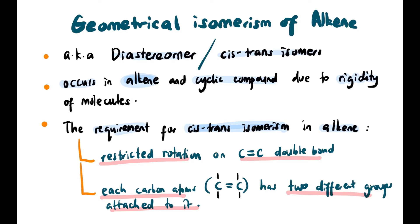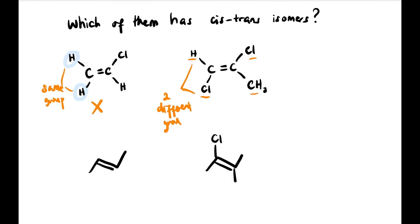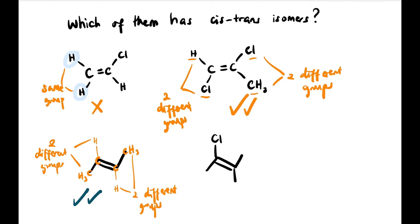Dan yang kedua, carbon-carbon dekat carbon double bond itu has two different groups attached to them. Now, let's have a look — which of them has cis-trans isomers? Yang first ini, kita nampak carbon yang sebelah kiri itu dia ada hydrogen dengan hydrogen melekat. So, cannot — because hydrogen dengan hydrogen adalah same group. Dia punya syarat mesti two different groups attached. Contoh yang kedua pula, dekat carbon yang pertama itu ada H dengan CL — two different groups. Yang sebelah kanan itu pun two different groups: CL dengan CH3. So, this one has cis-trans isomers — penuhi syarat.